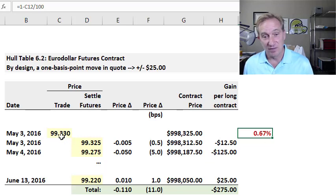You can see it's only 67 basis points away from 100. This trade price, quite high, is anticipating a future three-month LIBOR of only 67 basis points.